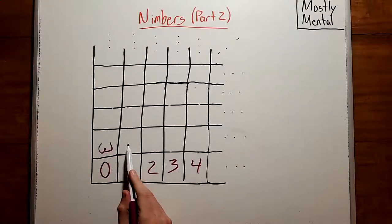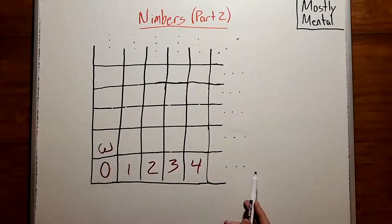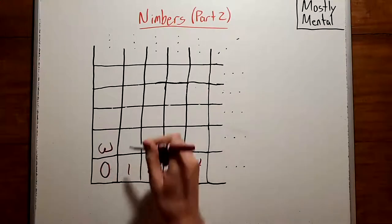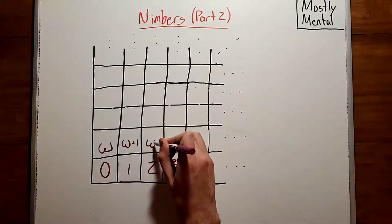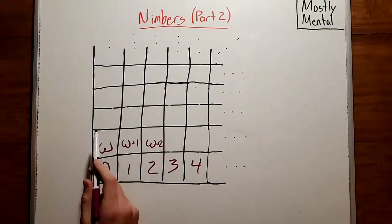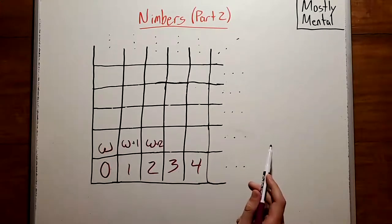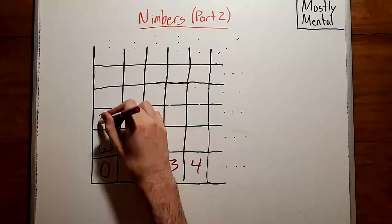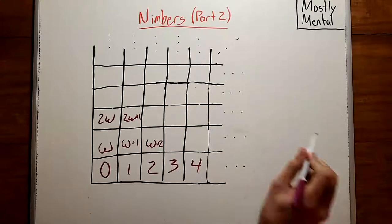And these cells to the right all have to be larger than that, since they can reach all the whole numbers and also omega, so they're going to have values omega plus 1, omega plus 2, and so on. And these cells up here have to be bigger than everything with 1 omega, so these are going to be 2 omega, 2 omega plus 1, and so on.